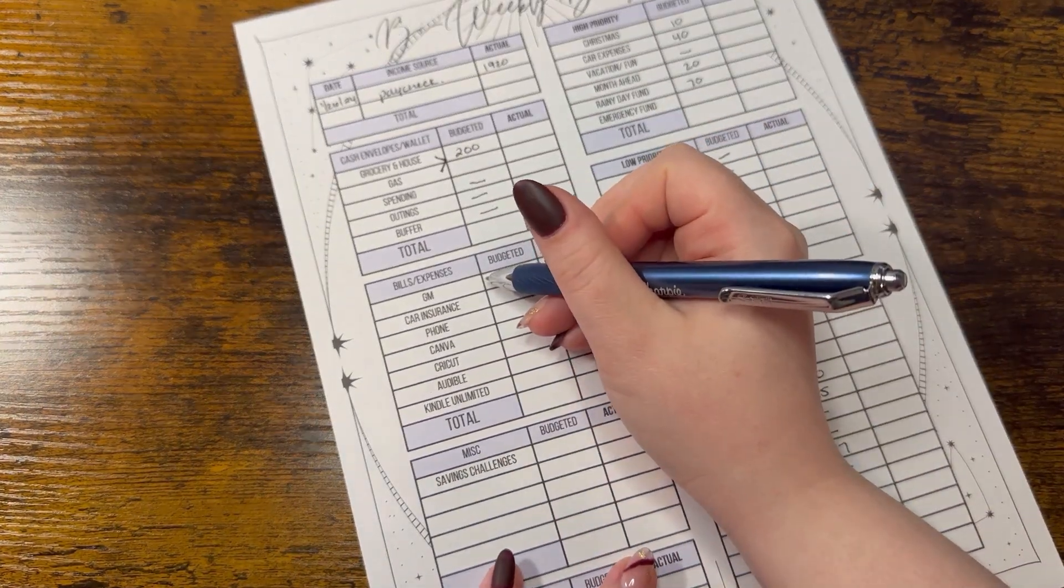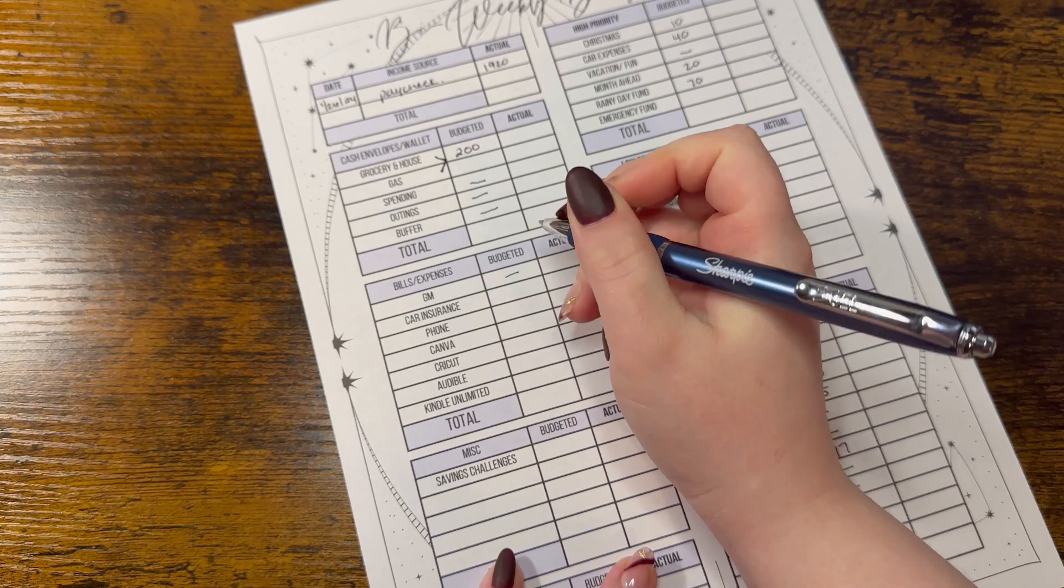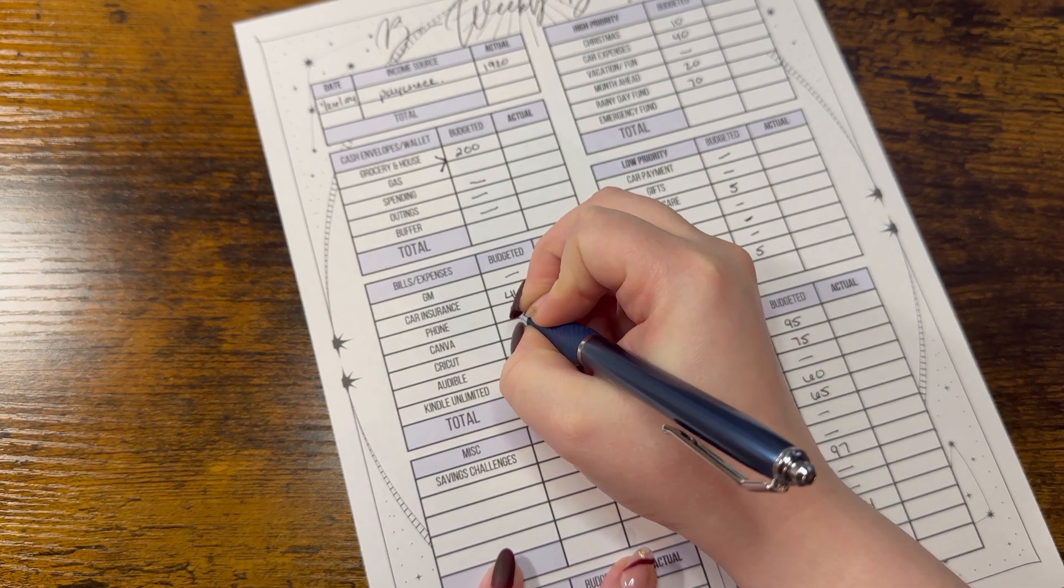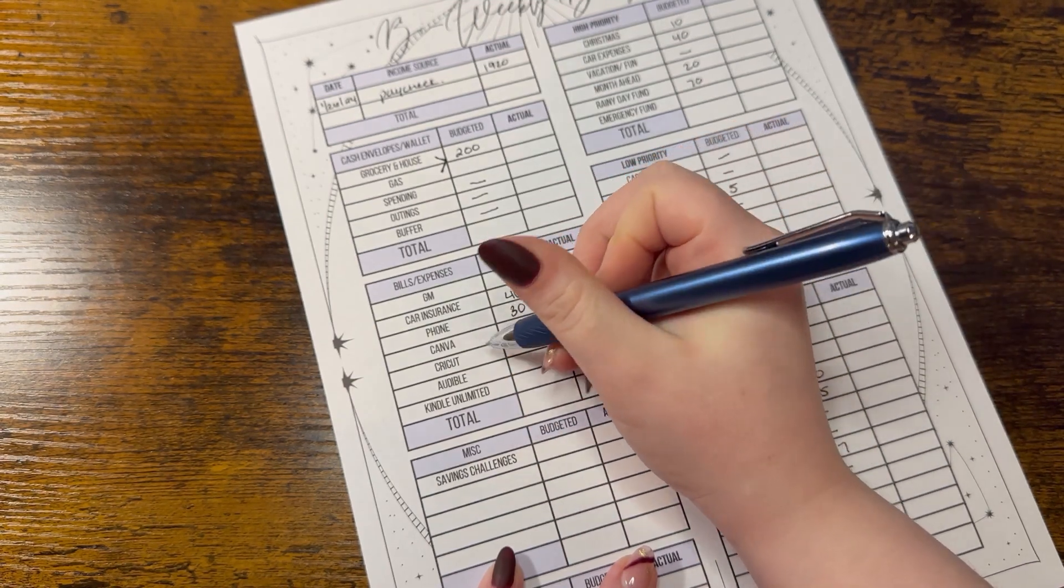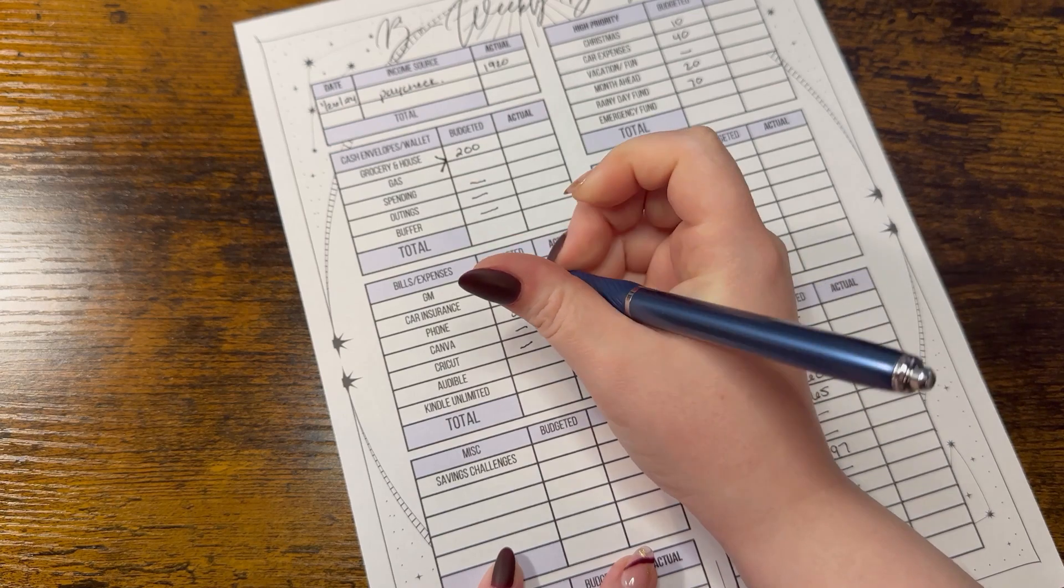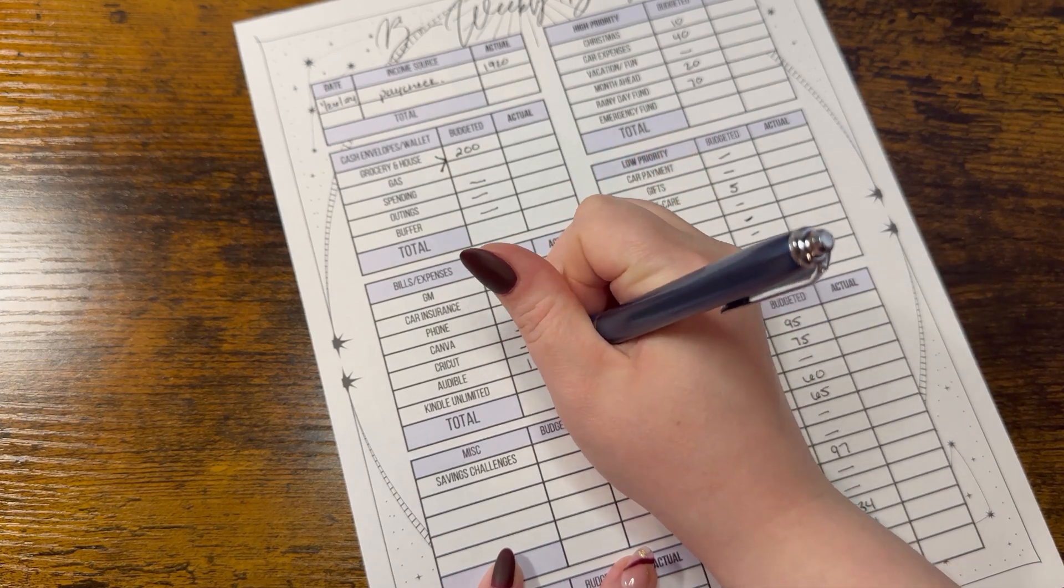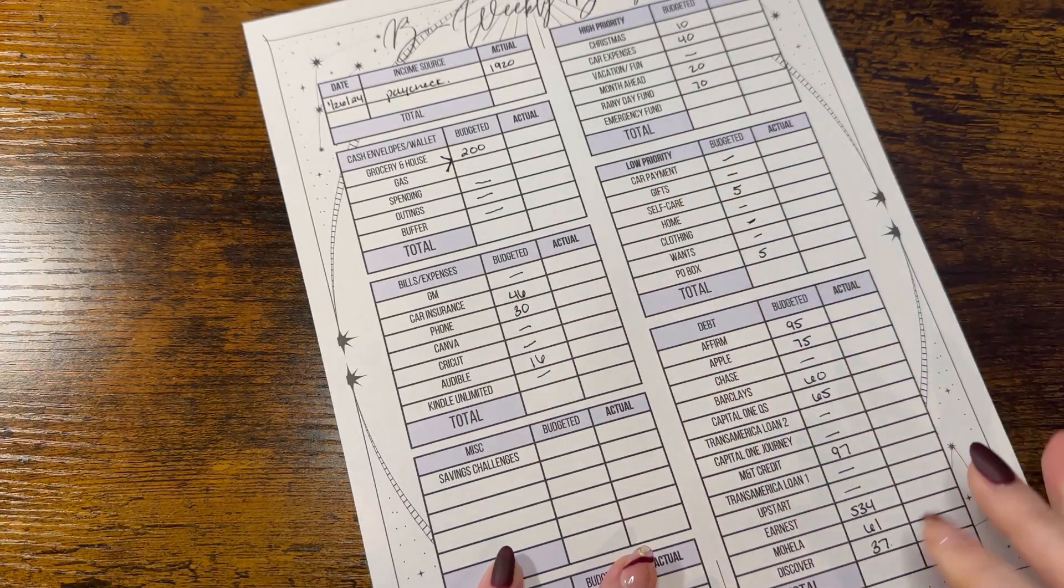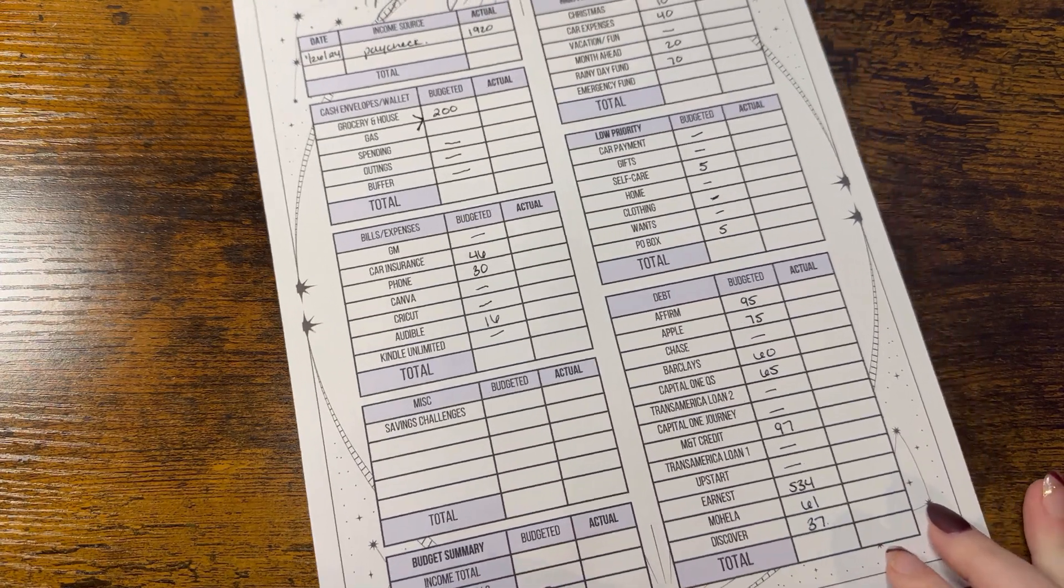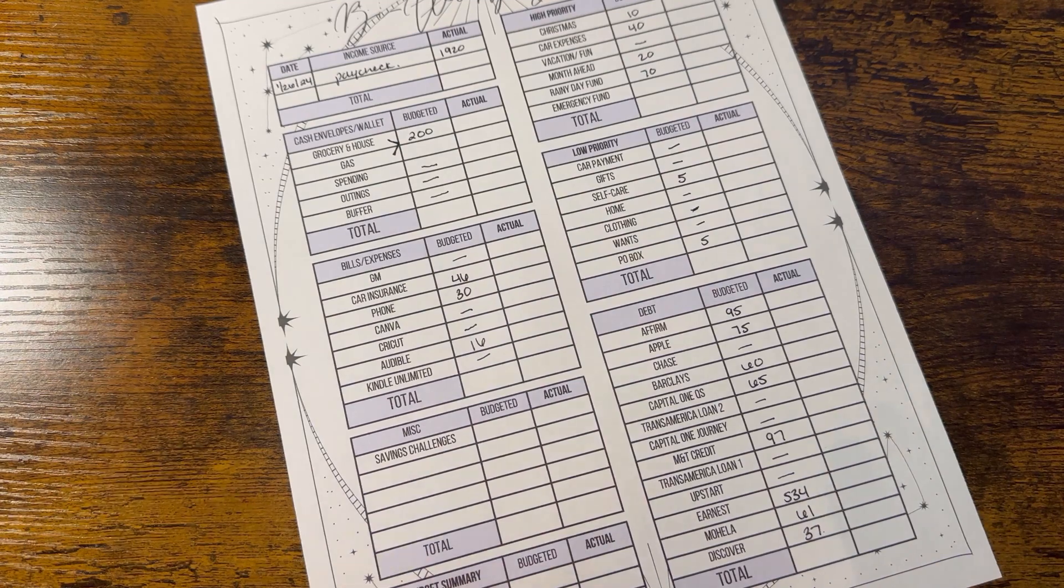Other expenses: GM is not getting paid with this check. Car insurance always gets $46 and phone always gets $30. Canva and Cricut don't get paid this check. Audible gets $16. And I currently don't have Kindle Unlimited. So we're going to see where that leaves us.